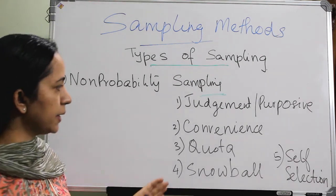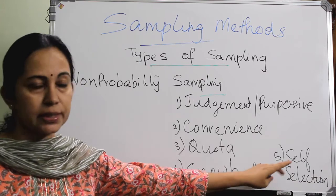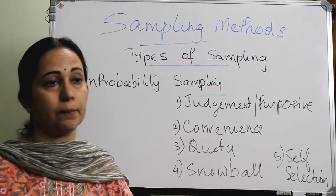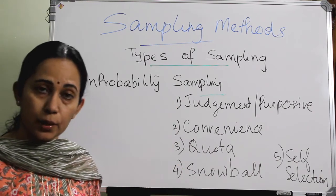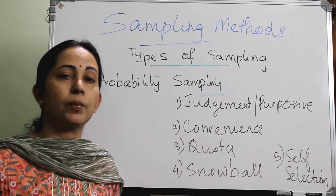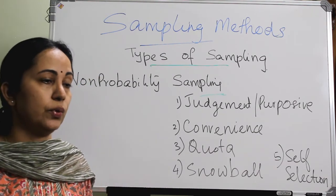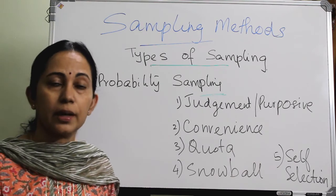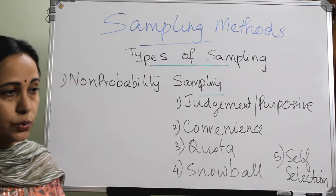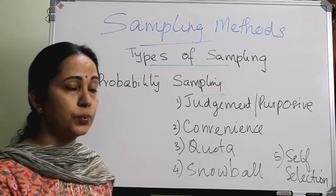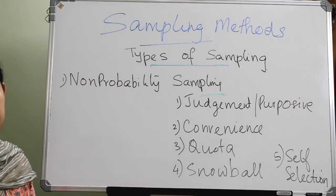Non-probability sampling is mainly of four types, though some textbooks mention a fifth — self-selection sampling. The chance of bias is very high in non-probability sampling, and it is not usually used for analytical studies. If you are going to prove an association or a causal relationship, it is better to go with probability sampling.